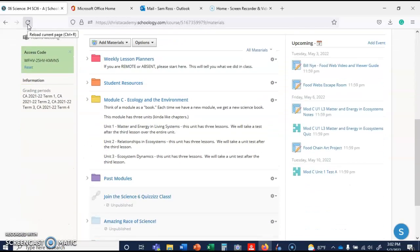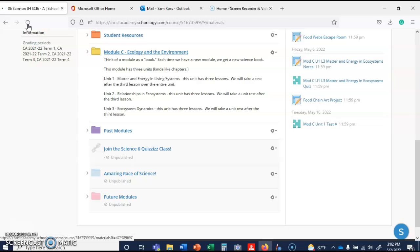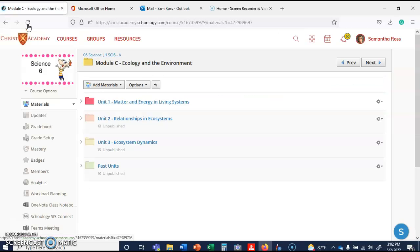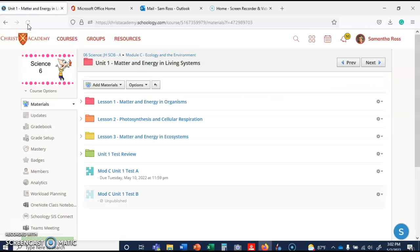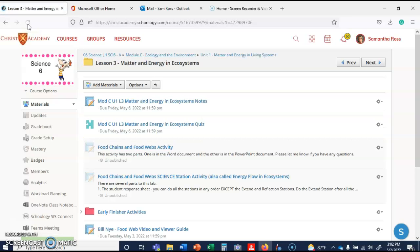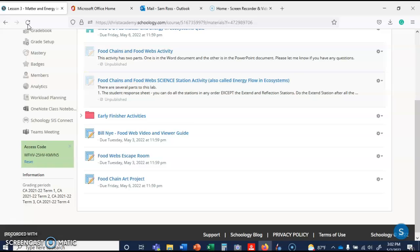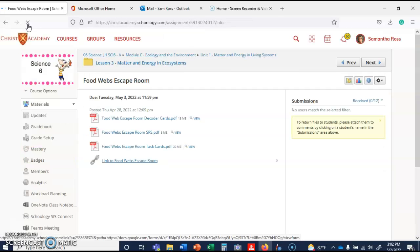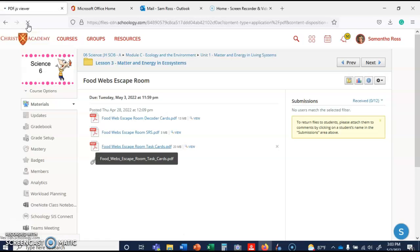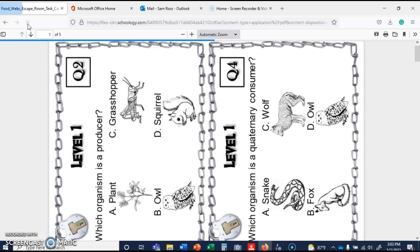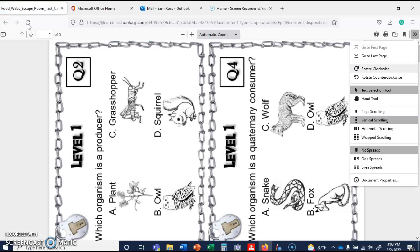So I'm going to go ahead and show you where it's at. We're going to click here, Module C. We're going to click here on Unit 1, Lesson 3. We're going to scroll down. You don't have the stuff that's in gray, so you did Bill Nye yesterday, so you'll do Food Web Escape Room. We have several different things here. So let's go ahead and open up our task cards, and let's kind of talk through this.